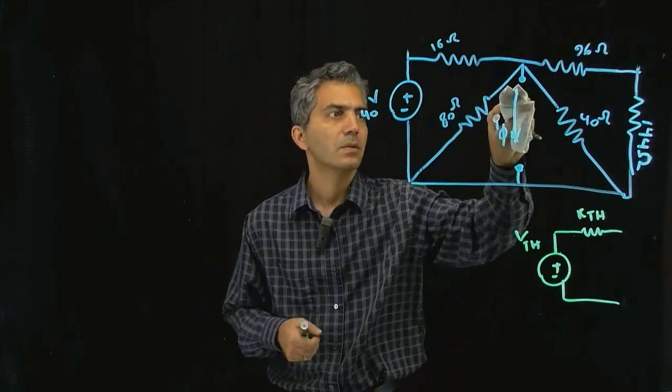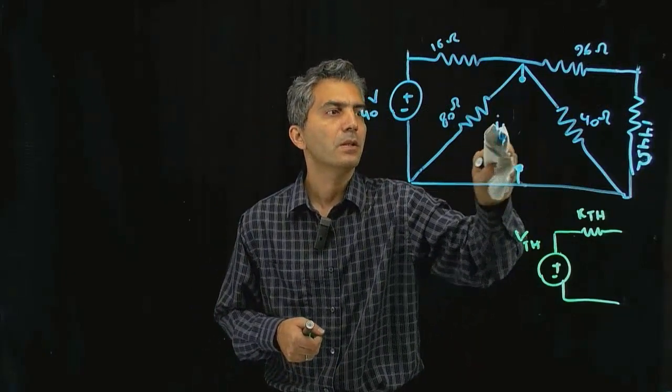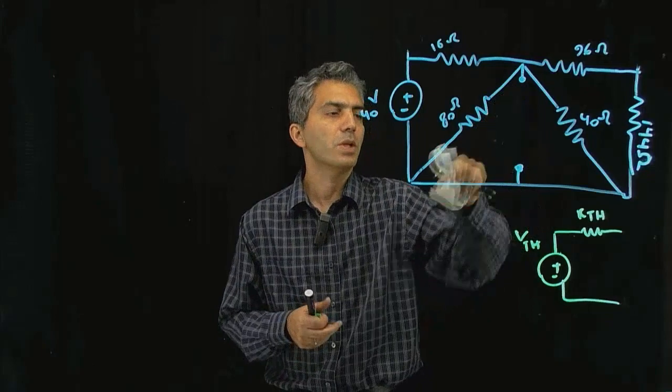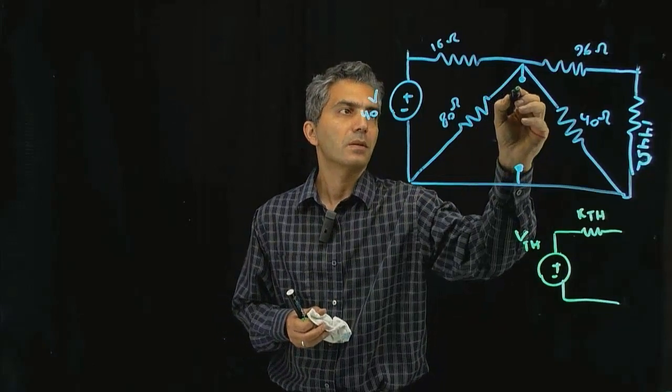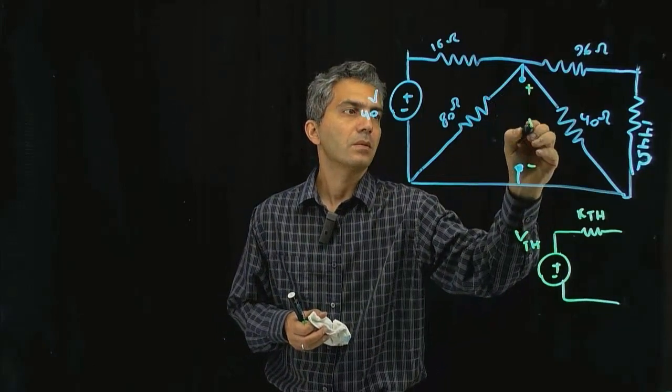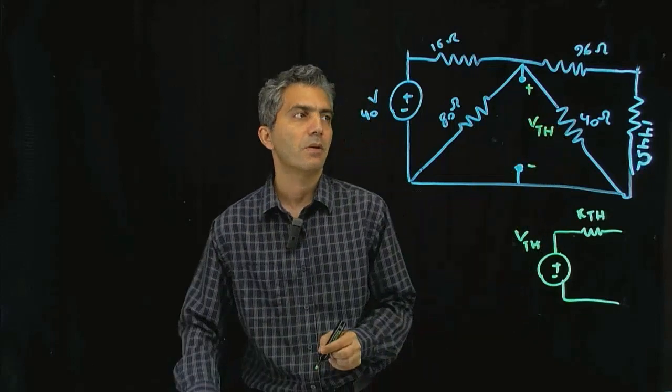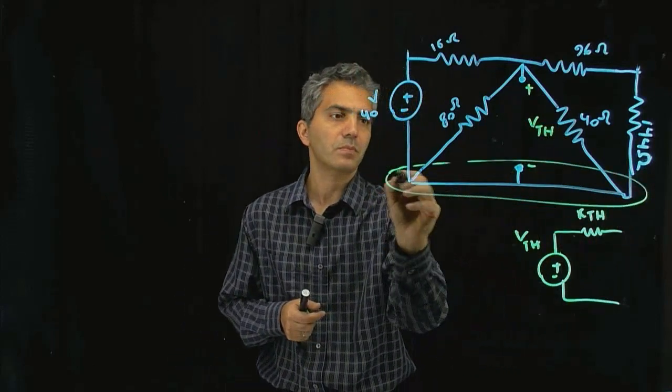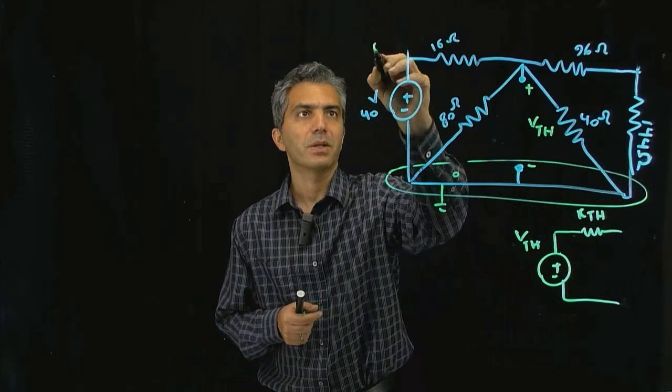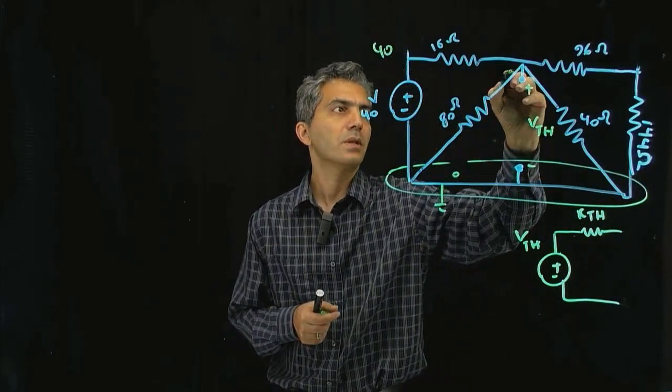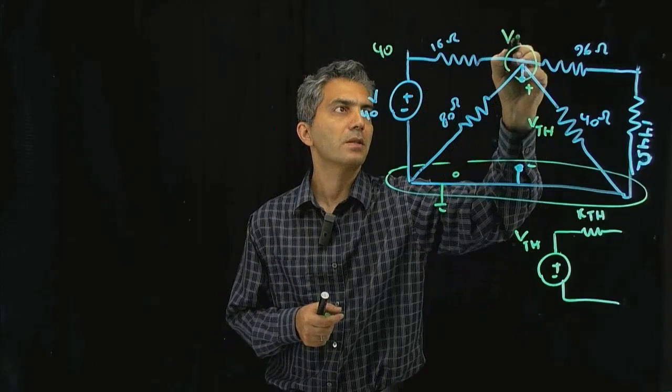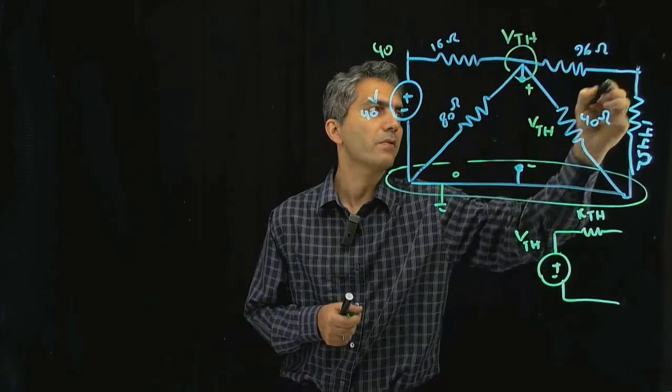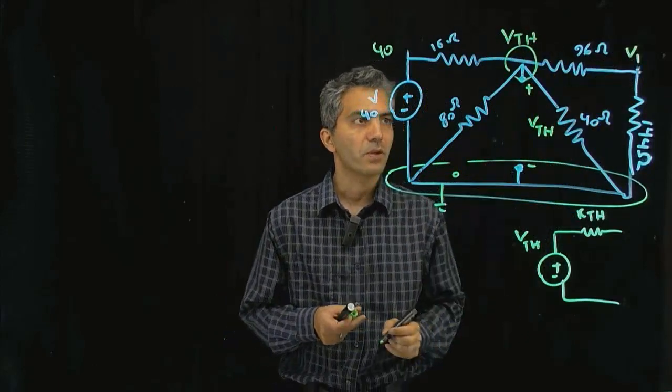There's my current here and assuming that this is my V_Thevenin, now I'm going to calculate my V_Thevenin. I can take that as my ground, that's 40 volts and by putting that there, this automatically becomes my V_Thevenin and I can call that V1.